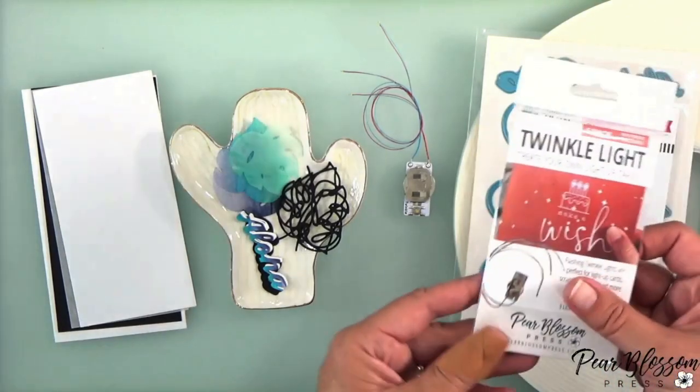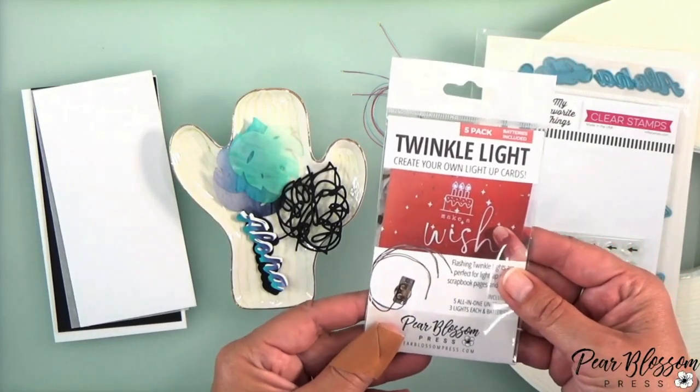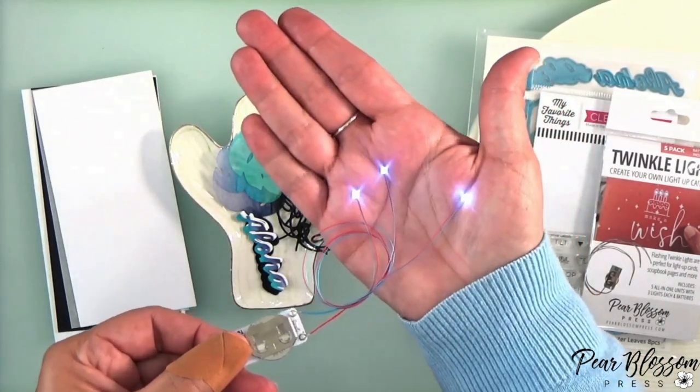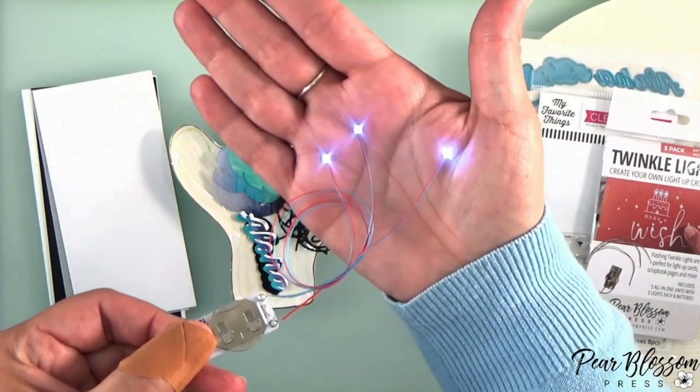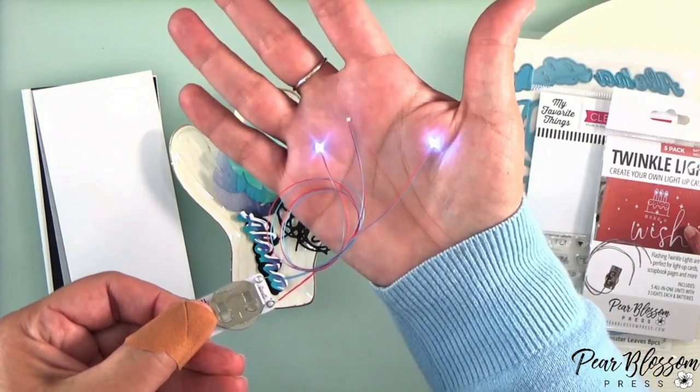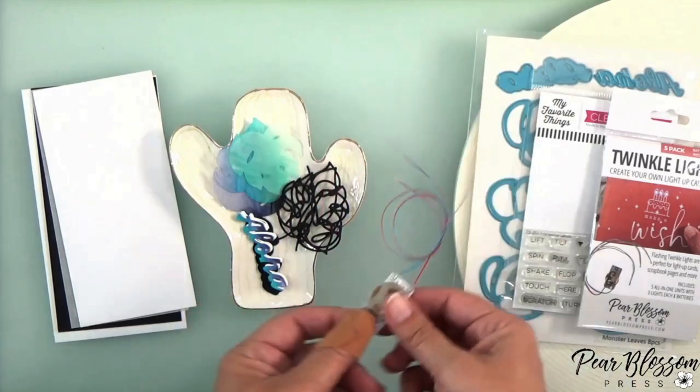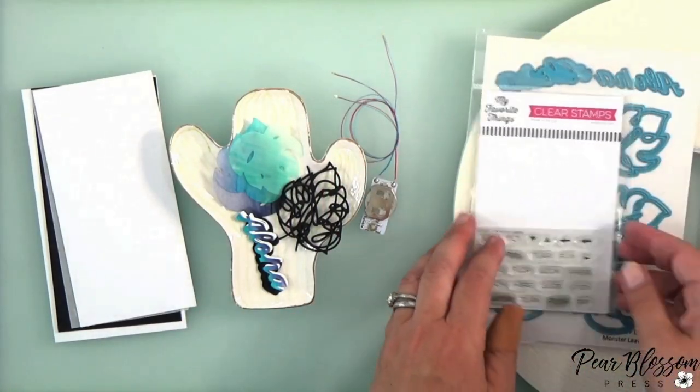Today I'm going to make a stained glass card with our brand new twinkle lights. If you haven't seen these before, they're really fun. They're just like our easy light except instead of the light staying on while you hold the button, they flash and they'll get out of sync so they twinkle. They're pretty fun.